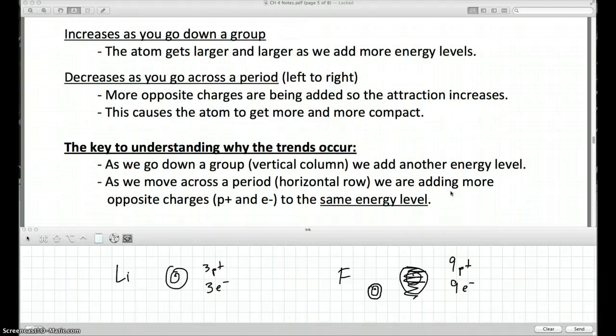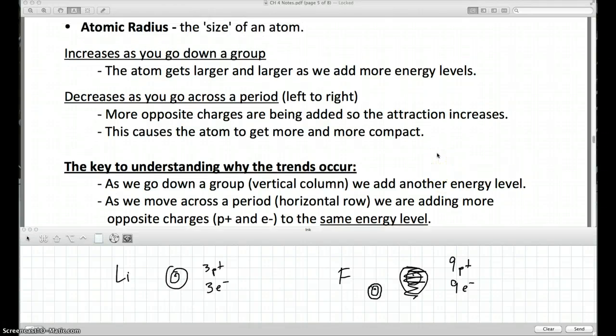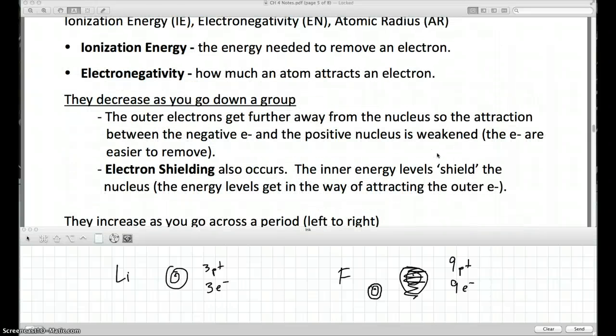So the key to understanding these trends here, as you go down a group, so from top to bottom, adding another ring. As you go across a period, horizontal row, from left to right, you're adding more and more opposite charges to the same energy level. So you're not adding an energy level as you go across, you're adding more opposite charges. If you can remember those two things, you can kind of explain all of these trends. Atomic radius, electronegativity, and ionization energy.